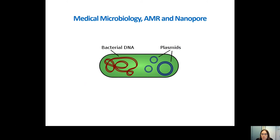Here's a picture of a bacterium with two types of DNA in its genome. It has the chromosomal DNA, which is big and circular, and then it can have plasmids, which are smaller and also circular. They can be present in single copy or in multiple copies, and there can be more than one type of plasmid in the bacteria.